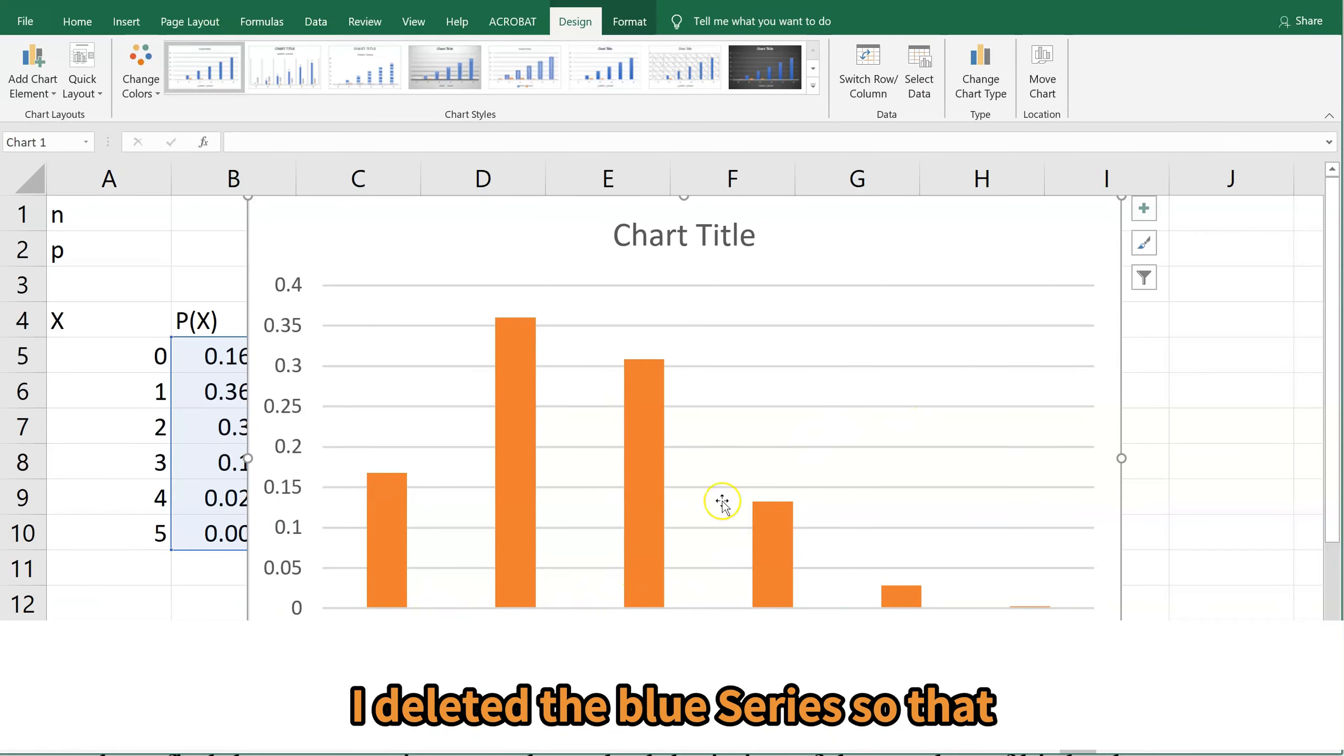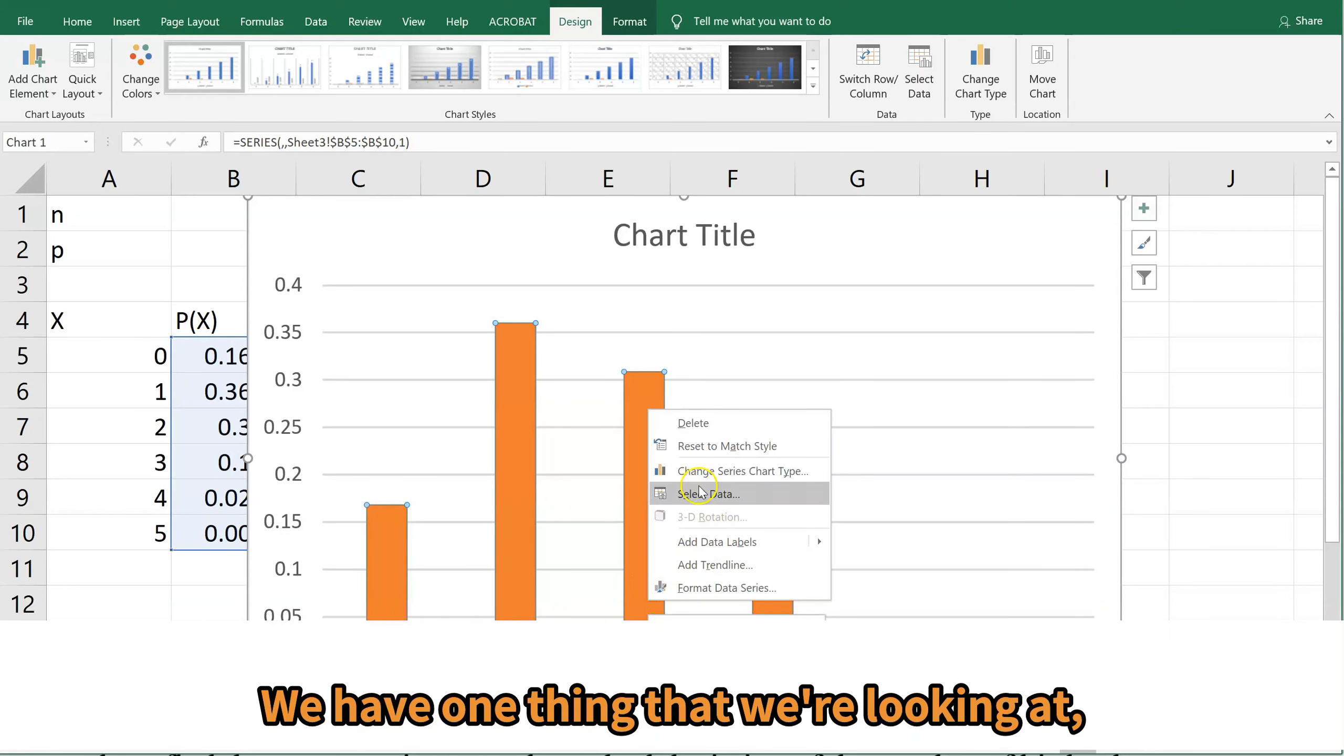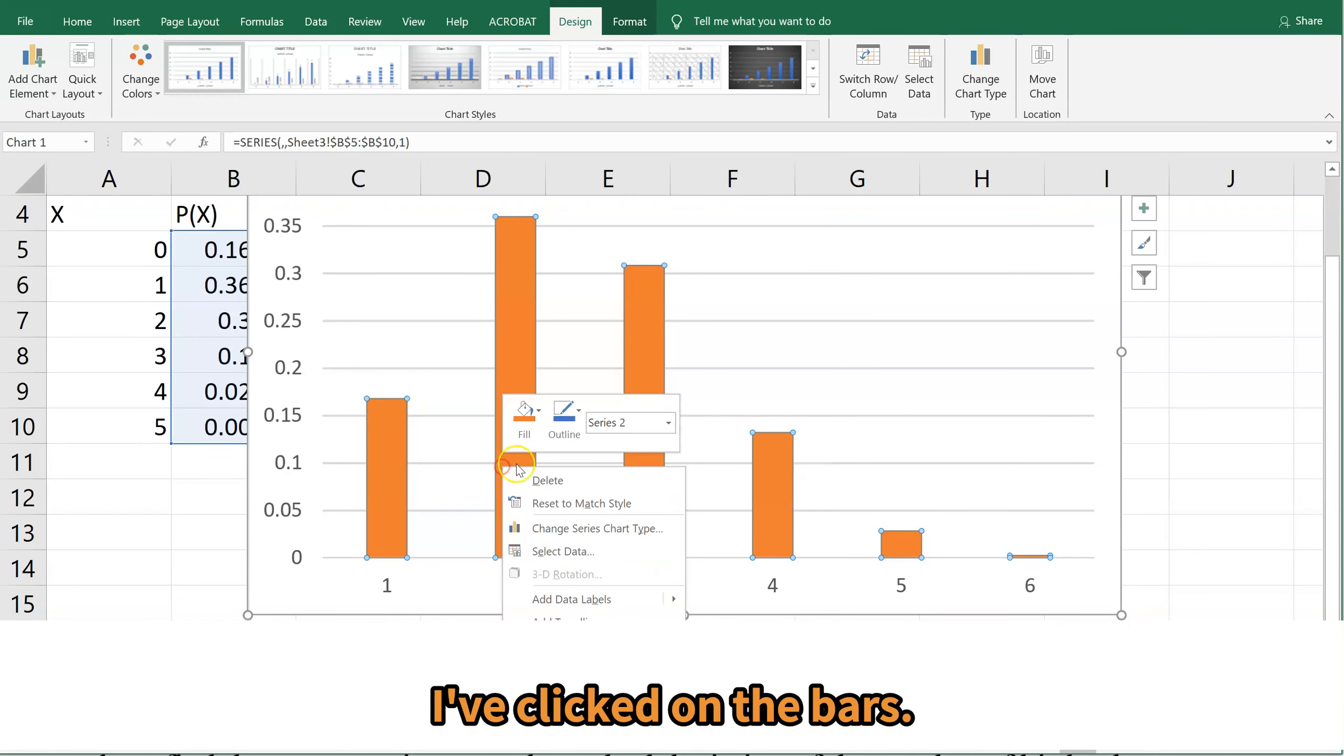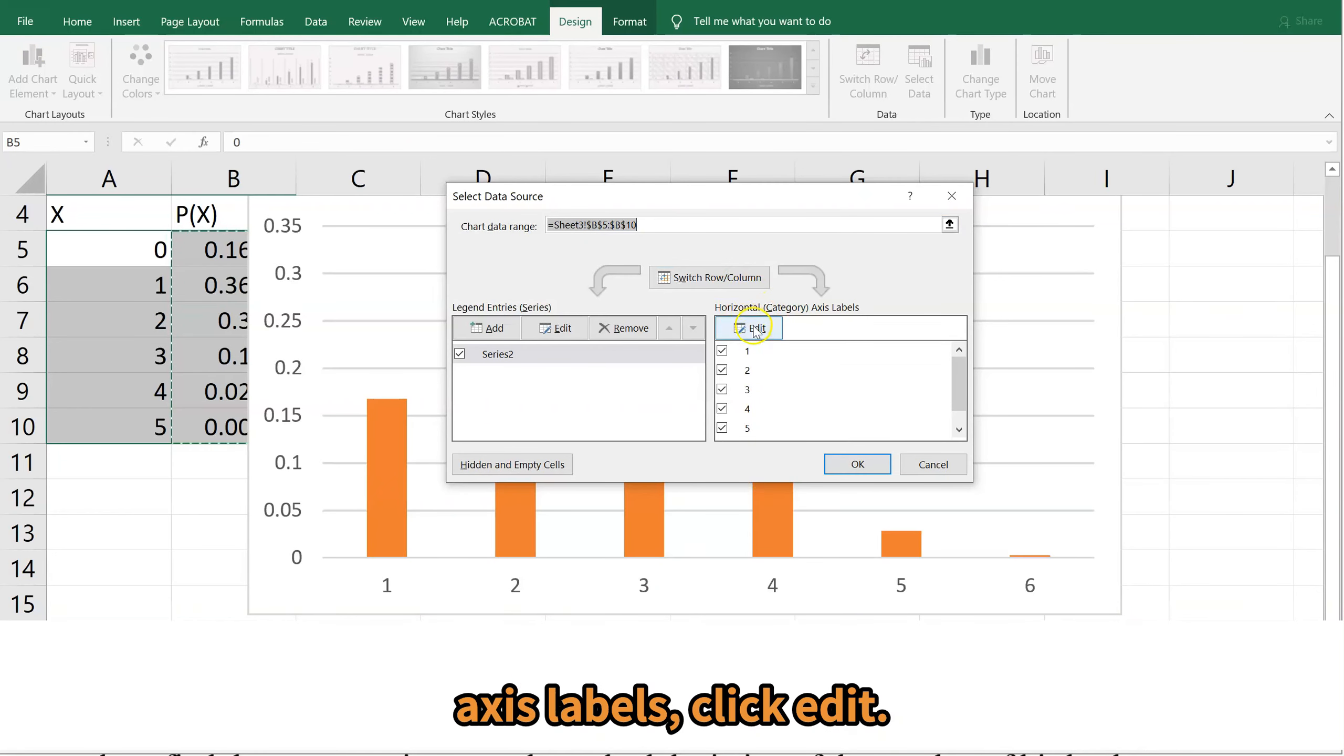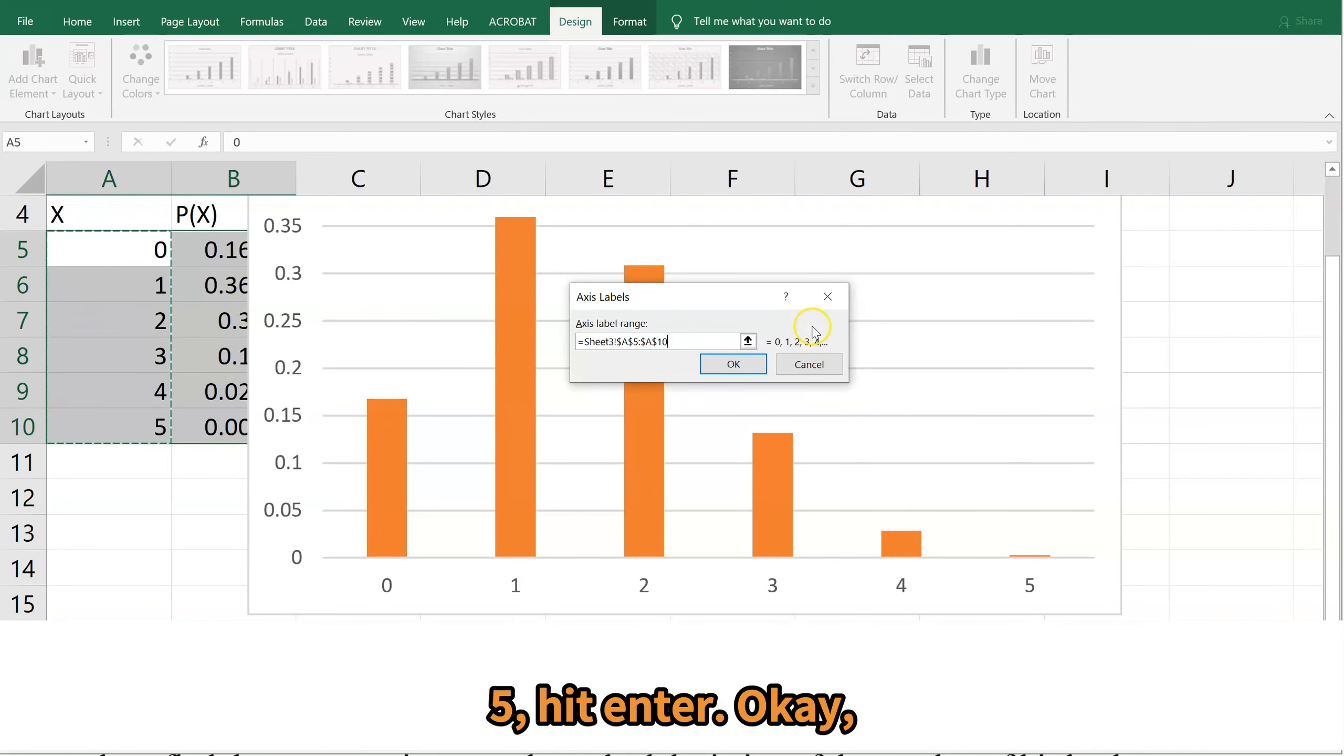Delete the blue series so that I'm left with this series two. I don't really like the legends because this isn't that complicated. We have one thing that we're looking at. So I need to change these labels on the x-axis. I've clicked on the bars and I'm going to go to select data here. This horizontal category axis labels, click edit. Axis label range is going to be zero, one, two, three, five. Hit enter.